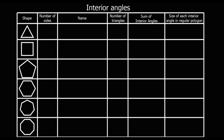Here we're going to look at interior angles. Interior angles are the angles inside a shape. So we've got these different shapes here. We know it's a triangle — three-sided. So here I've got a triangle. How many triangles can I make going from corner to corner? Well, it's one.